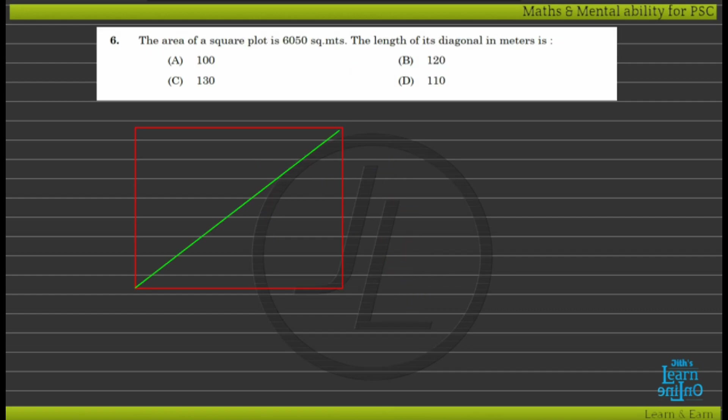The area of a square plot is 6,050 square meters. The length of its diagonal in meters is? The square plot has area 6,050 square meters, and we need the diagonal length.